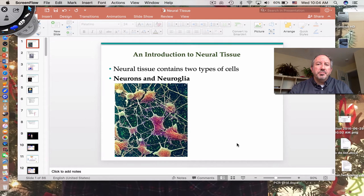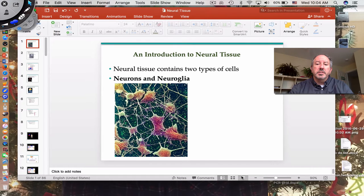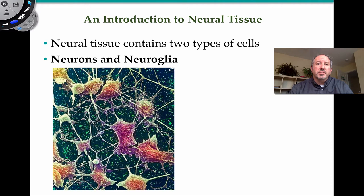Hey everyone, it's Mr. Sinti. Today I have the joy of introducing to you the wonderful world of neural tissue. Neural tissue, as the name may imply, is a grouping of all different kinds of cells that are responsible for coordinating our movements, processing information, sensory information from the outside world, thinking, learning, feeling, emotion — basically controlling all aspects of the human body.